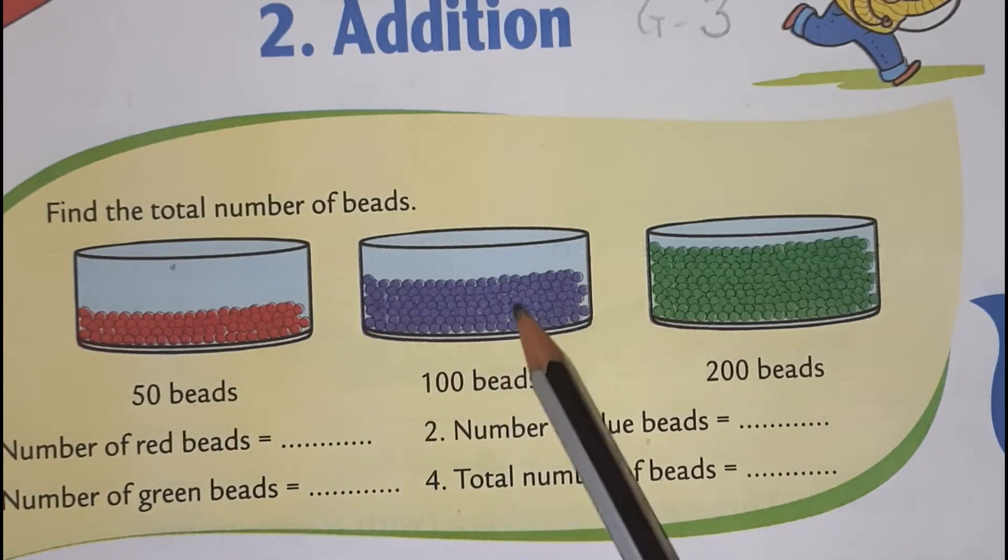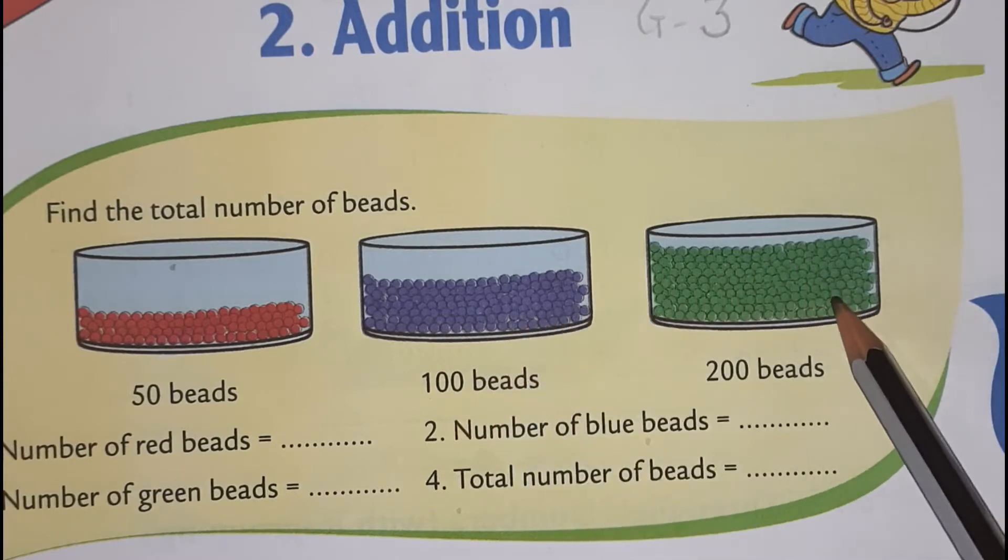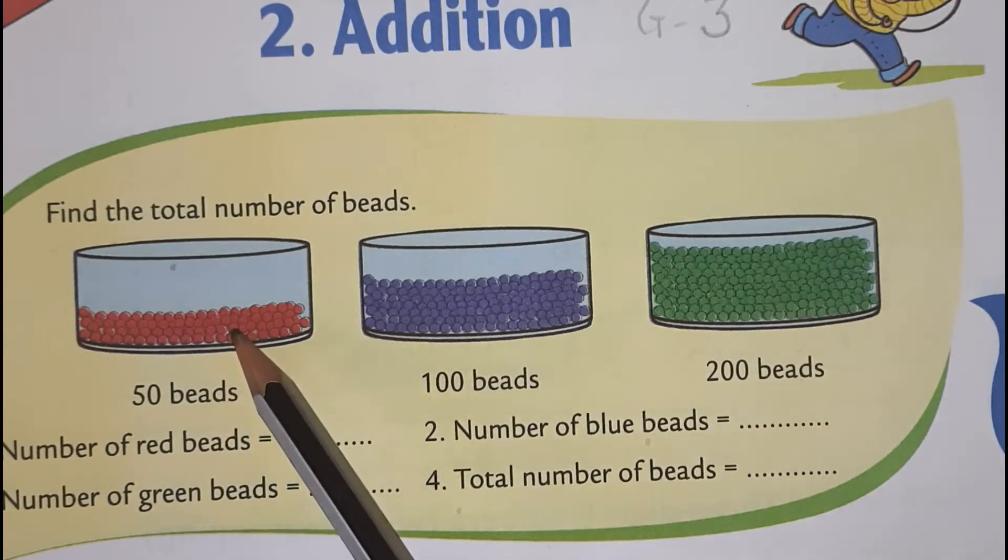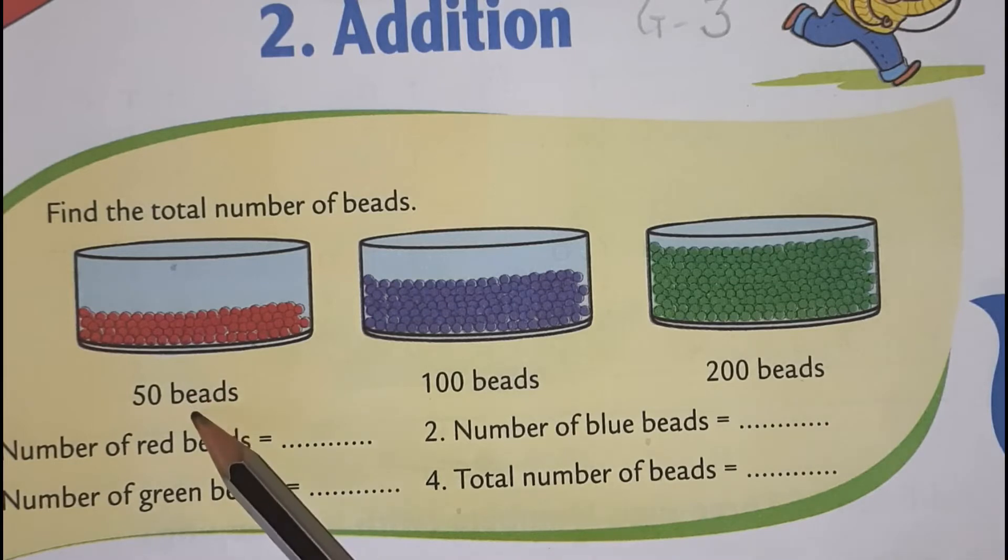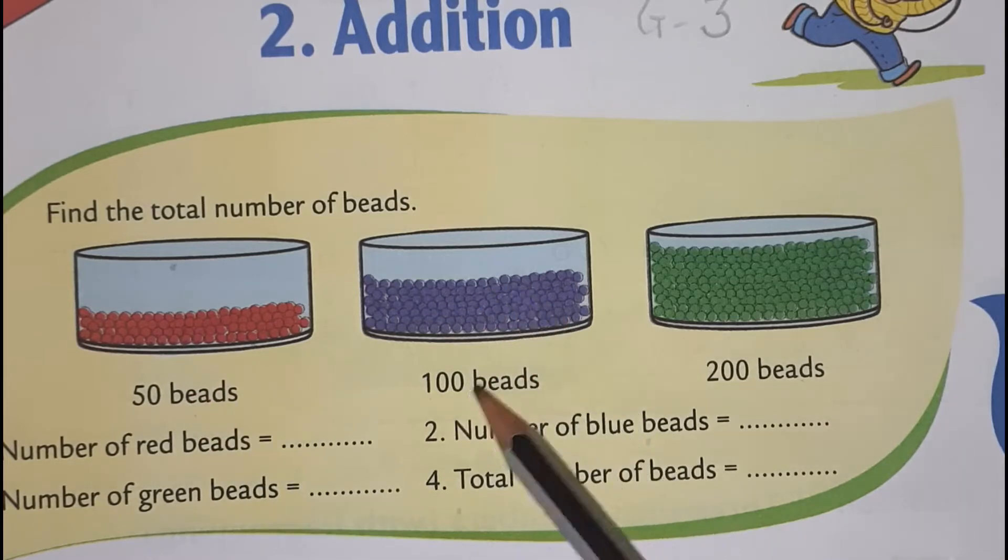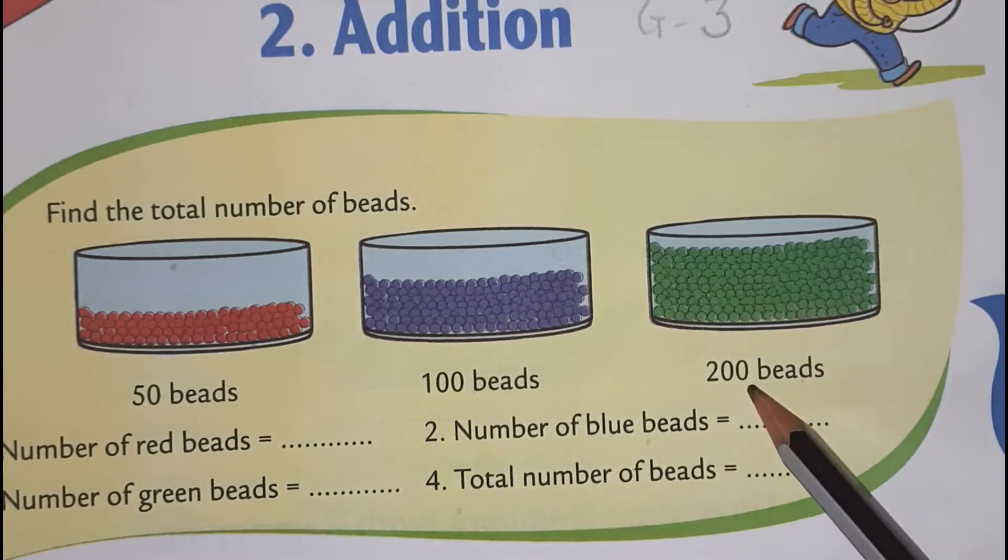In this container drum, it is 50 beads of red color. In this container, there are 100 beads of purple color. And in this box, 200 beads of green color. Here, 50 beads red, 100 beads purple, 200 beads green.